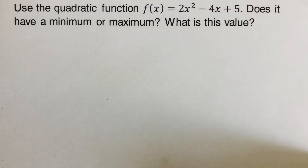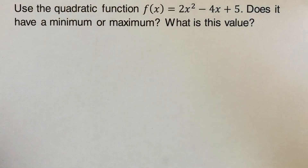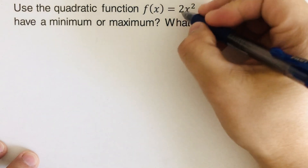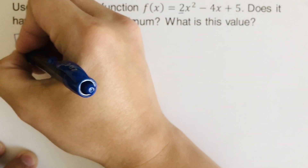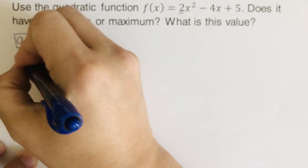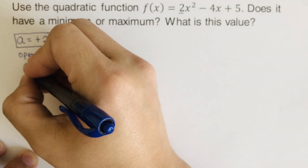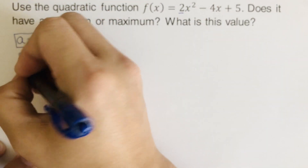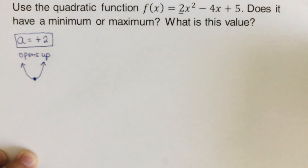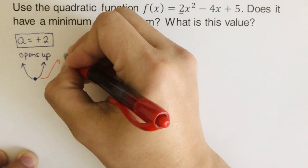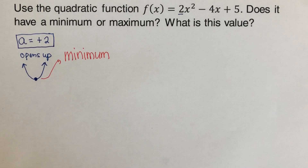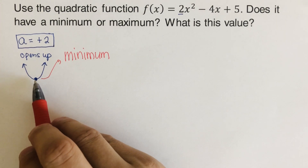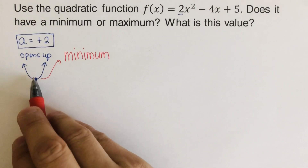Let's take this first example. We have f(x) = 2x squared minus 4x plus 5. Does it have a minimum or maximum? To determine that, we look at 'a'. Our a value is positive 2, so since it's positive, the graph opens up — it will look like this — and this is our minimum.